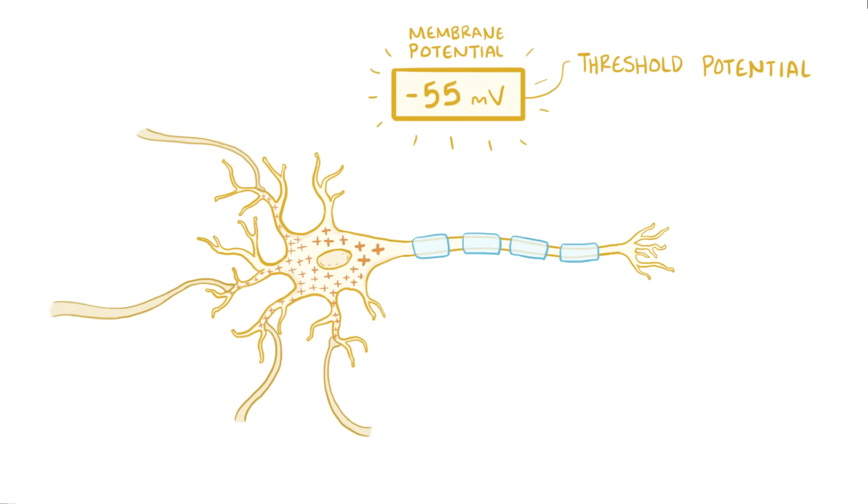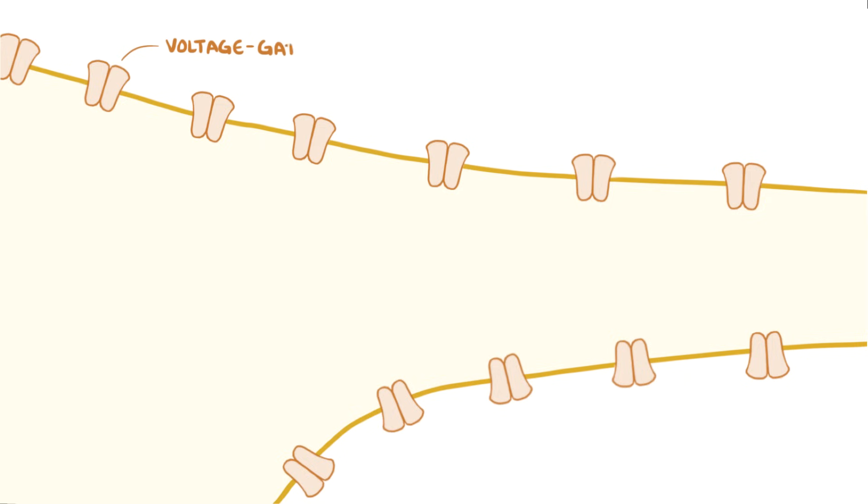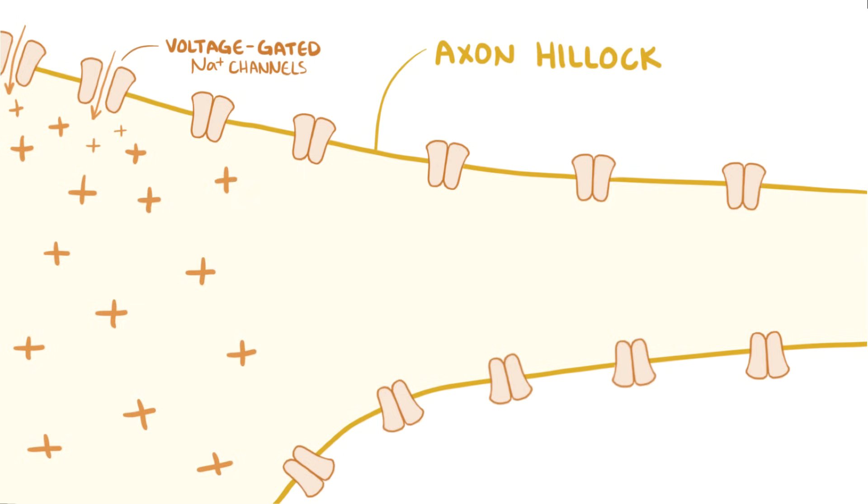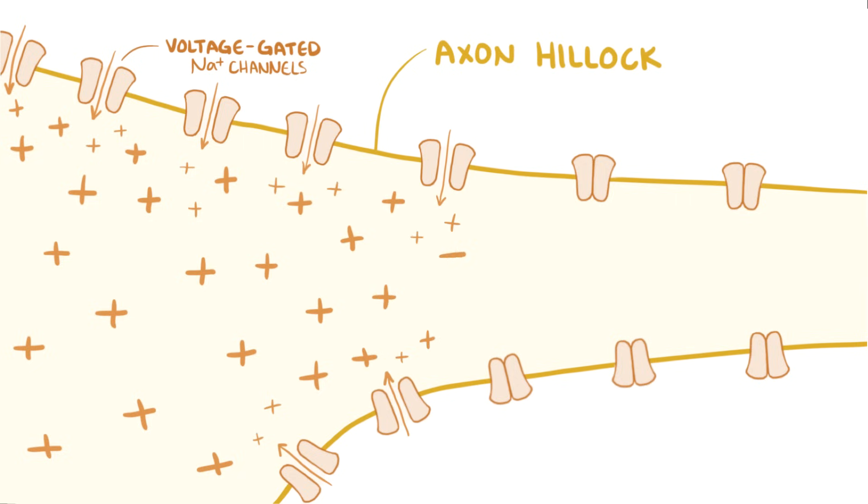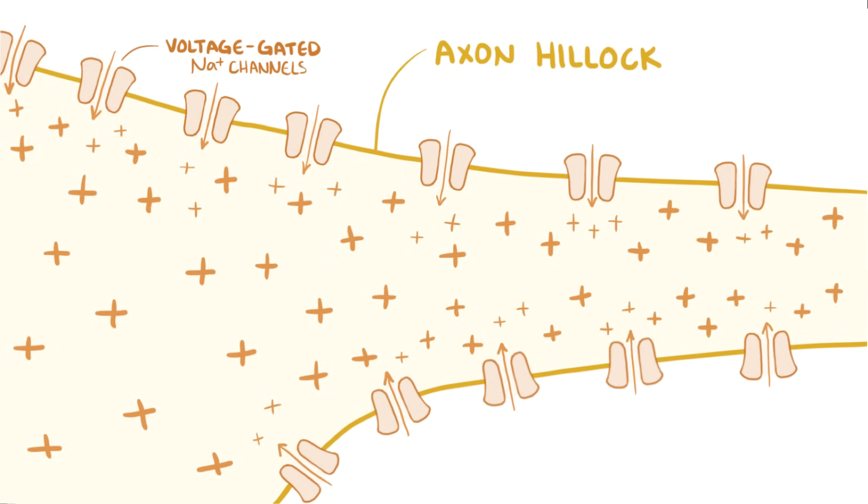When it hits this threshold value, it triggers the opening of voltage-gated sodium channels at the start of the axon, which is called the axon hillock. These voltage-gated channels open in response to a change in voltage, and when these open, sodium rushes into the cell. The influx of sodium ions and the resulting change in membrane potential causes nearby voltage-gated sodium channels to open as well, setting off this chain reaction that continues down the entire length of the axon, which ends up being our action potential, and when this happens we say that the neuron has fired.